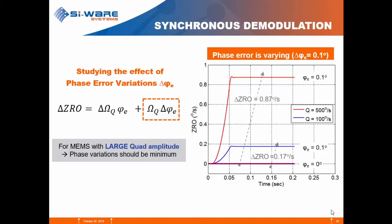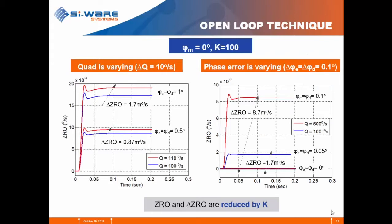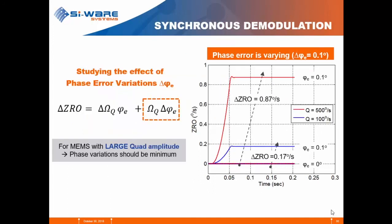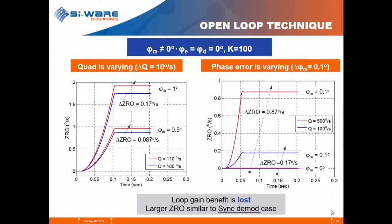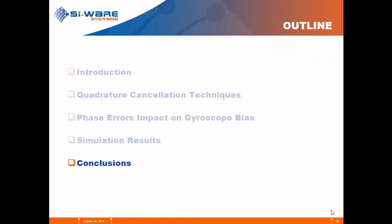Again, large variation as already discussed. For the open loop technique, in the ideal case where phi_m equals zero, note that the scale is now in milli-degrees per second compared to degrees per second in the previous slide — zero rate variations are reduced by a factor of k. However, in the real case where phi_m is not equal to zero, the scale returns to degrees per second change, the loop gain benefit is lost, and we are back with large zero rate output variation.